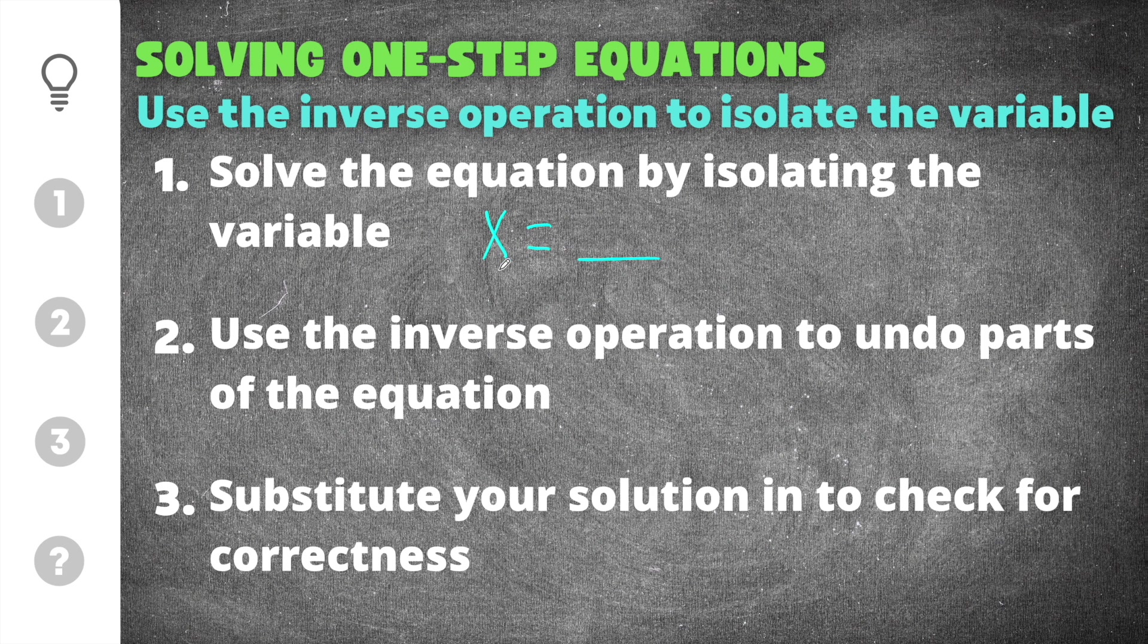In order to do that you need to use inverse operations to undo parts of the equation. What that means is you need to use the opposite operation of whatever is happening in the equation. That means if you're adding you have to subtract because subtracting is the opposite of adding, and if you're subtracting then you'll need to add. If you're multiplying you'll have to divide because division is the opposite of multiplication, and if you're dividing you'll have to multiply.